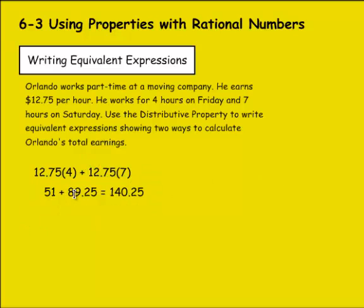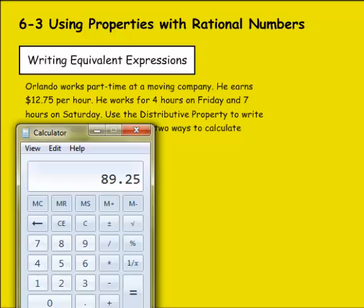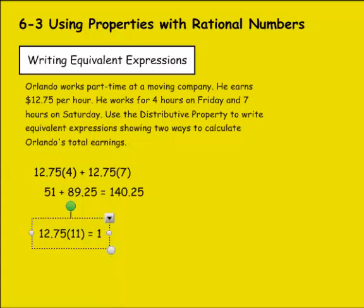Now what I can do instead, since I know he worked for a total of 4 on Friday and 7 on Saturday and he made the same amount each day, I could add the 4 plus 7 to see that he worked a total of 11 hours. So I could do $12.75 times 4 plus 7, which would be 11. And that would give me $12.75 times 11, $140.25.